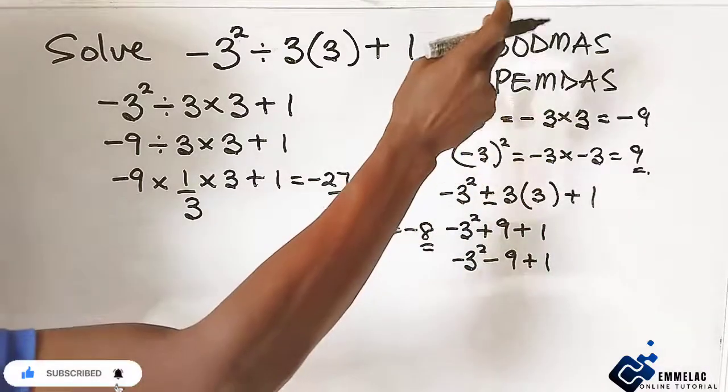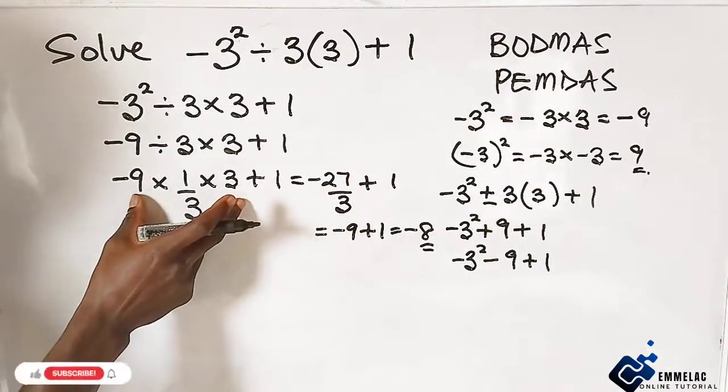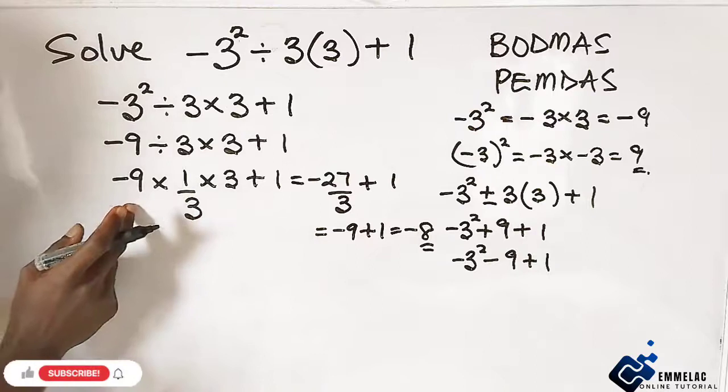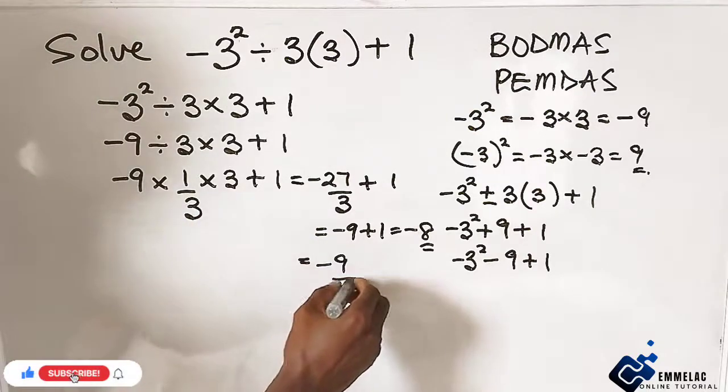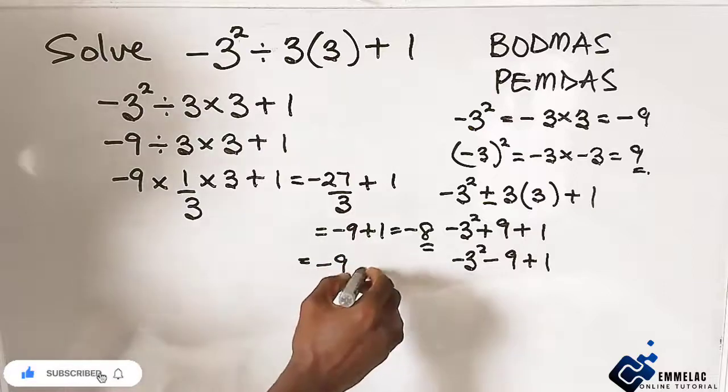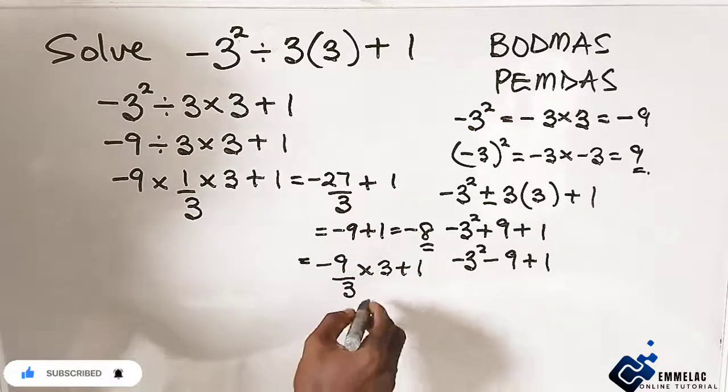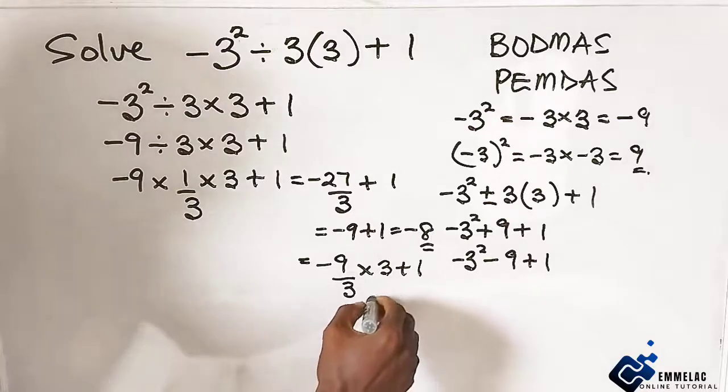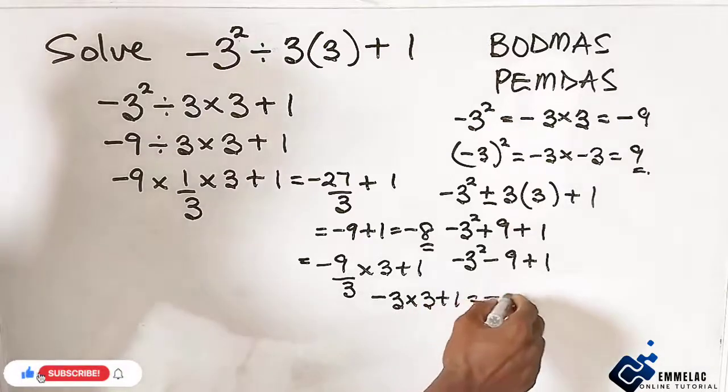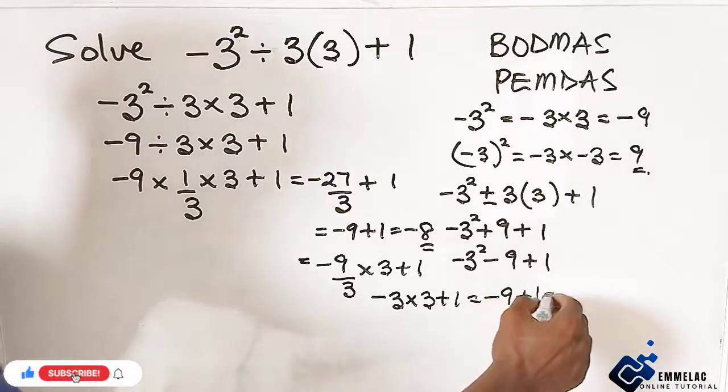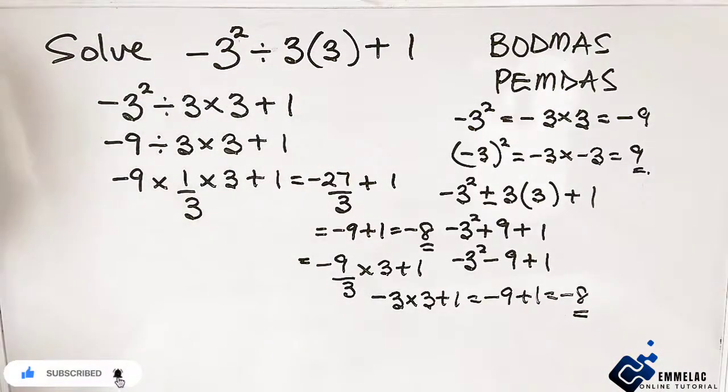And if we are to use BODMAS here, since we've multiplied, now the next thing is what? To divide. By division, we can say this is -9 divided by 3, now times 3 + 1. In this case here, we have -3 times 3 + 1, which will give us what? -9 + 1, which is what? -8.